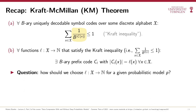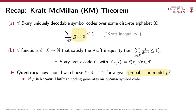In this video, we'll address the question of how one should choose these target codeword lengths. To answer this, we recall that data compression fundamentally relies on a probabilistic model of the data source. Given a probabilistic model, we already know how to construct an optimal symbol code — the Huffman coding algorithm from video 1.2 — and we'll prove that Huffman coding is optimal in next week's videos.